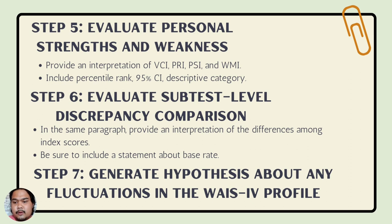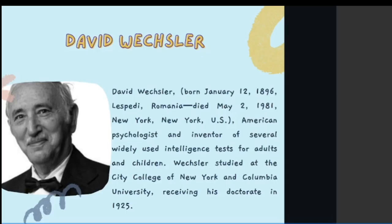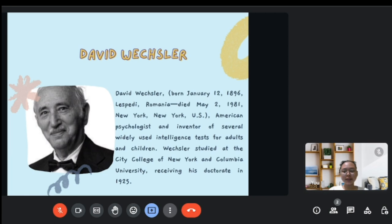Step 7, the last step, is to generate hypotheses about any fluctuations in the WAIS-4 profile. Integrate psychometric data with behavioral observations, client history and background information, and other sources of information. Further testing may be necessary. That would be all — thank you.